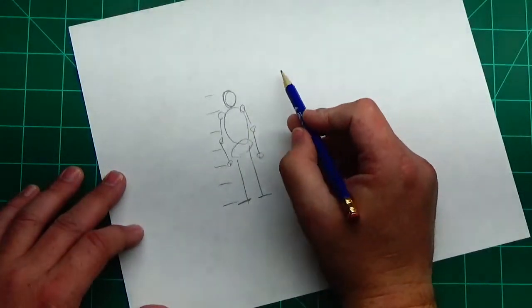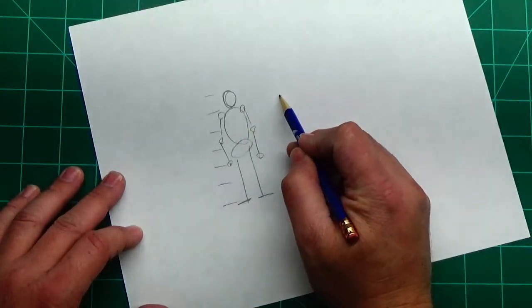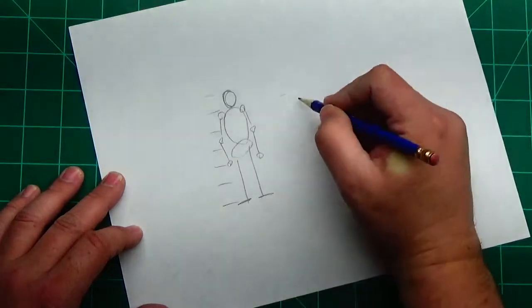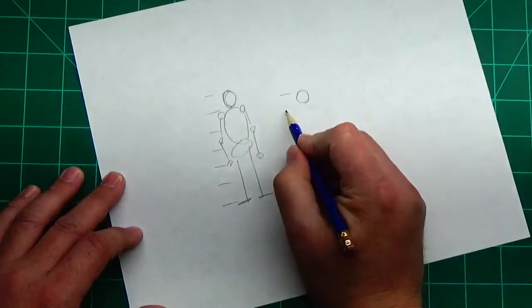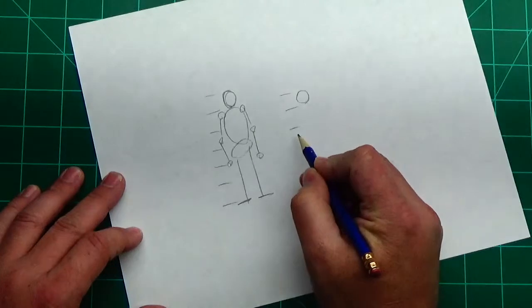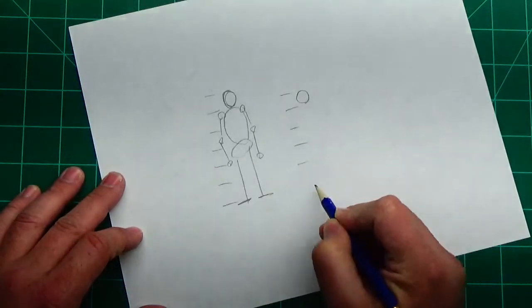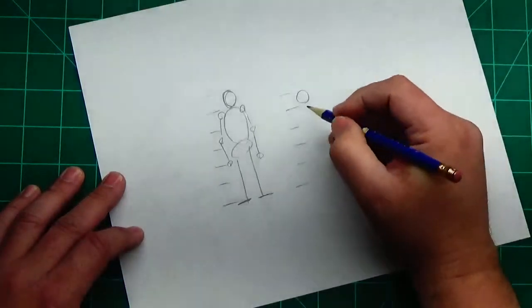If you were drawing a dwarf, you're going to do five heads. So you've got your head here. So one, two, three, four, five. And this could be a kid or it could be a dwarf.